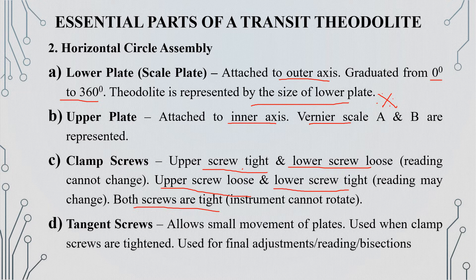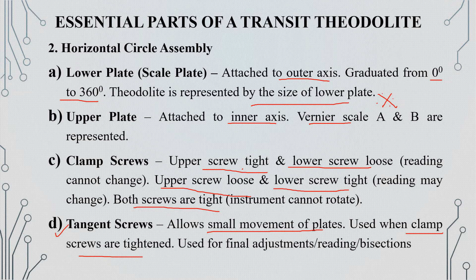Here are the tangent screws, used to make small fine movements. We will use a tangent screw at each station. Use the clamp screws tight. The tangent screws are used for final adjustments, readings, and bisections.